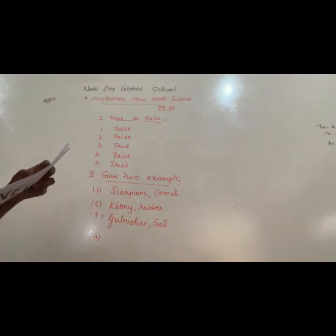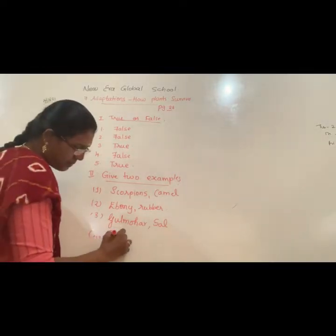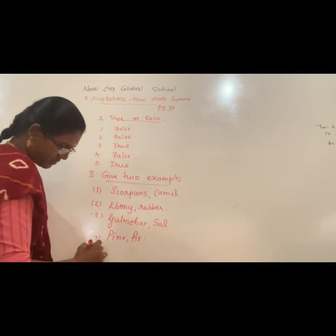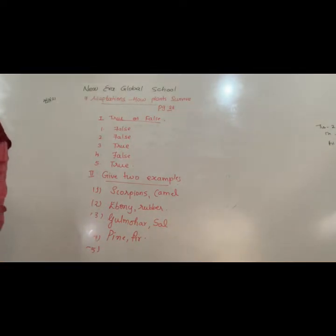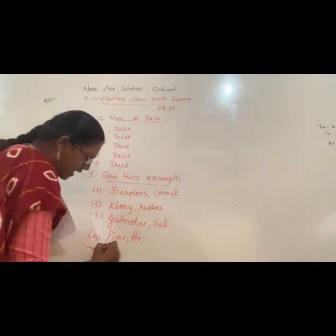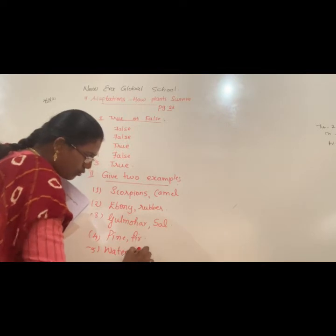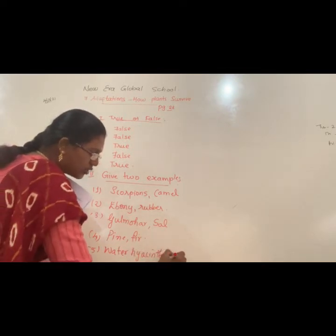Fourth one: what are examples of mountain trees? Pine and fir. Then fifth one: floating aquatic plants — what are the examples? Water hyacinth and duckweed.